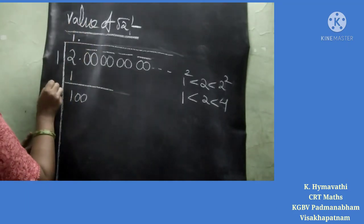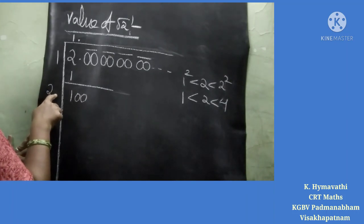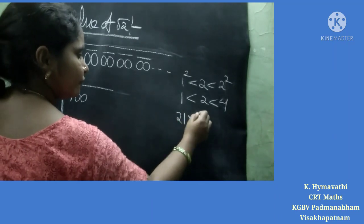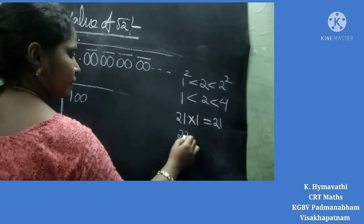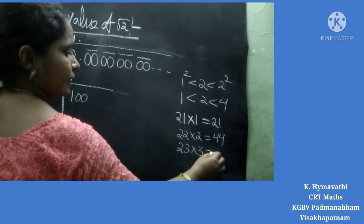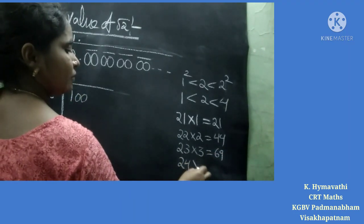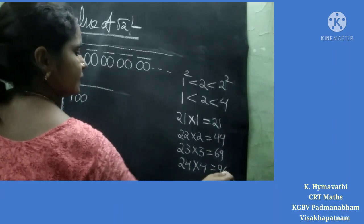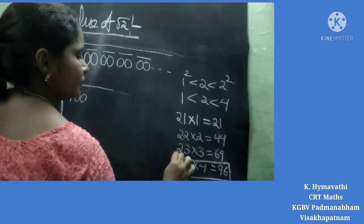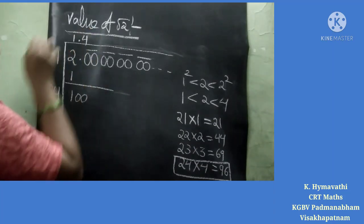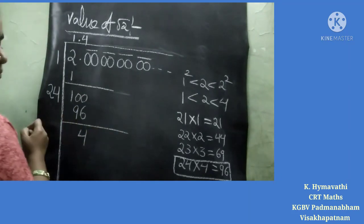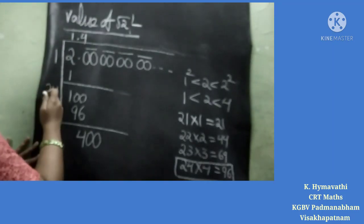Now 1 doubled is 2. We write the same digit in the unit place. So we try 21 into 1, giving 21; 22 into 2 gives 44; 23 into 3 gives 69; 24 into 4 gives 96. Since 96 is nearest to 100, we take 4. So 24 into 4 gives 96, and after subtracting, the remainder is 4.